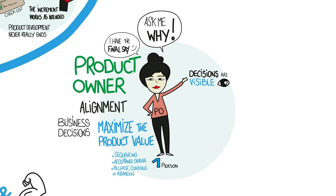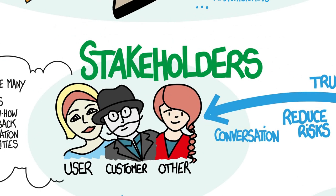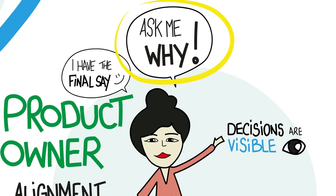If the return on investment looks bad, the product owner is expected to pull the plug. The product owner is often called the voice of the customer or stakeholder. Her primary focus is not simply on staying within the budget, but on ensuring that the sponsor's money is well spent. She knows by having good conversations with stakeholders and getting good answers to the why questions.